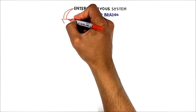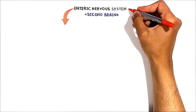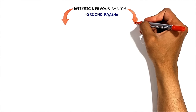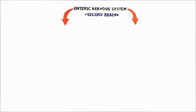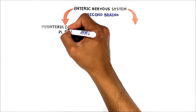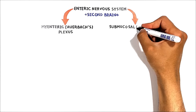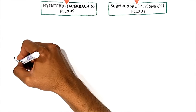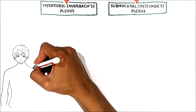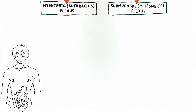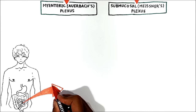The principal components of the enteric nervous system are two networks or plexuses of neurons, both of which are embedded in the wall of the digestive tract and extend from the esophagus to the anus. The first network is the myenteric plexus, also called Auerbach's plexus, and the second one is the submucosal plexus, also called Meissner's plexus.